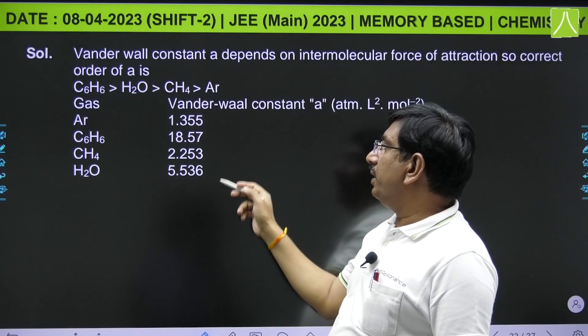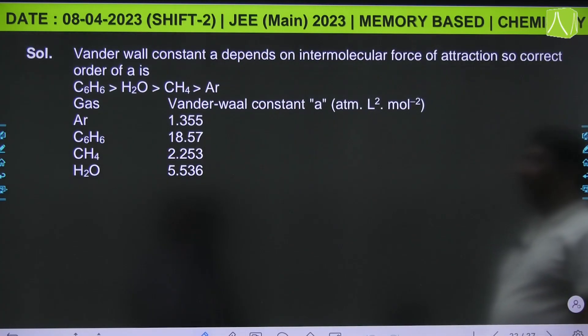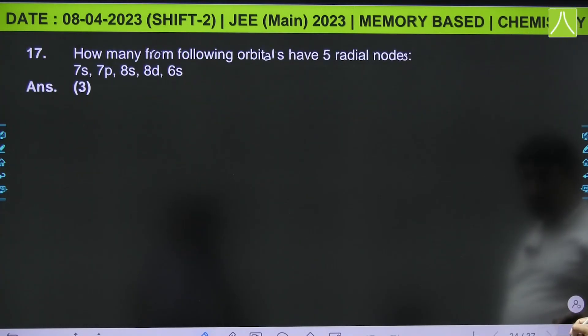Based on van der Waals constants, the order is benzene greater than water greater than methane greater than argon. It depends on the intermolecular forces of attractions.